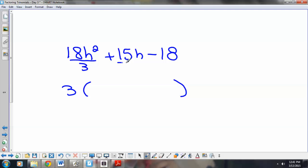Just divide everything by 3. So, 18h squared divided by 3 is 6h squared. 15h divided by 3 is 5h. And, negative 18 divided by 3 is negative 6. This is not an equation, so I'm not going to need to solve. But, I do have this trinomial in parentheses that I may be able to factor.